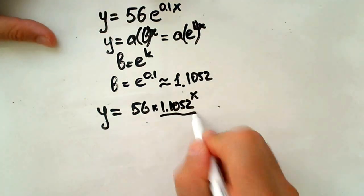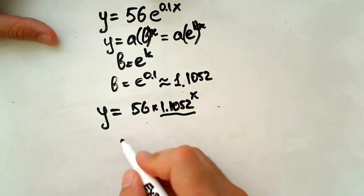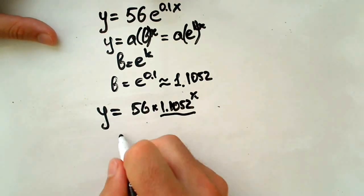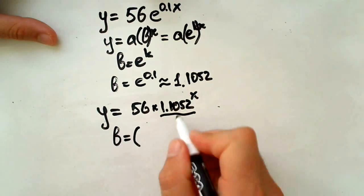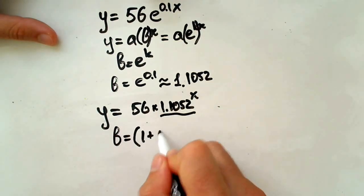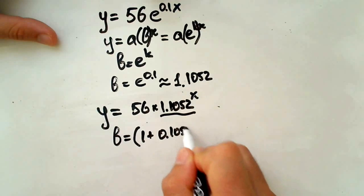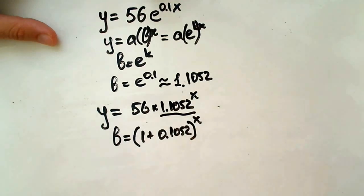What this is saying is that our annual growth rate which is b equals 1 plus 0.1052 to the x. And it means that our annual growth rate is actually 10.52%.